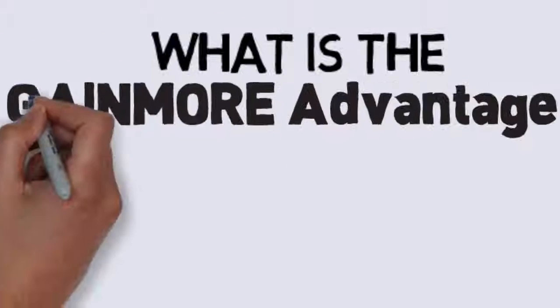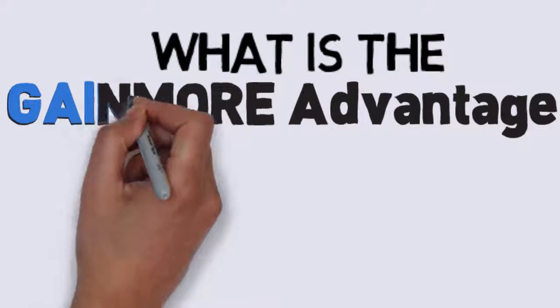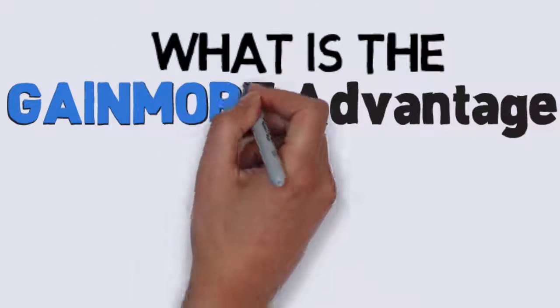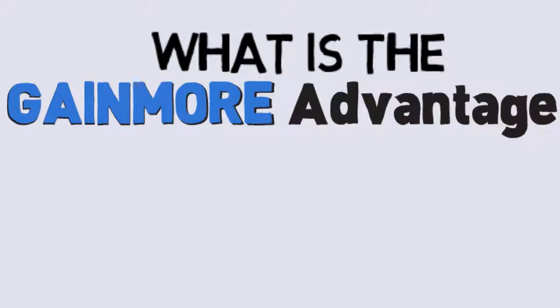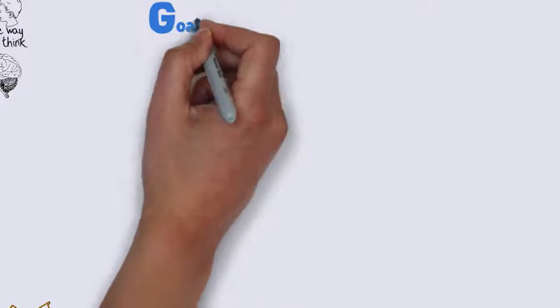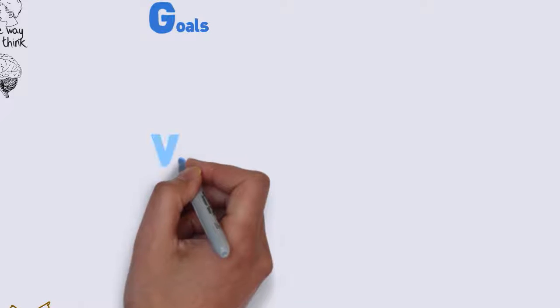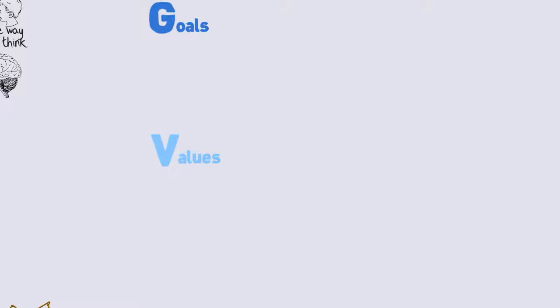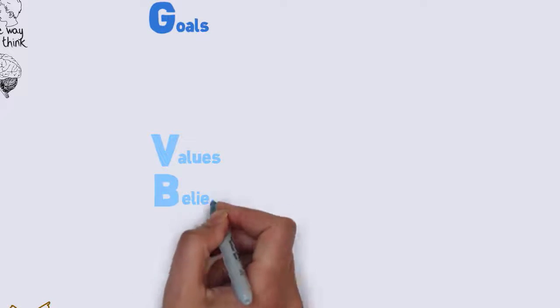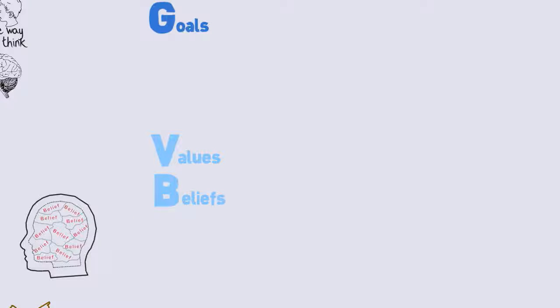So let me tell you about the Gaymore Model, and we'll start with why is it called Gaymore? Well, each letter represents a distinct step in the learning and development process. G stands for goals, and it incorporates the values and belief system for a particular person, and the vision of their goal.